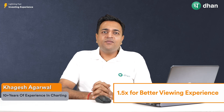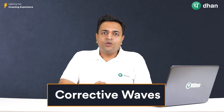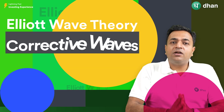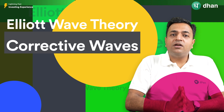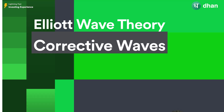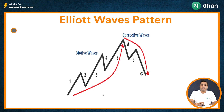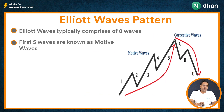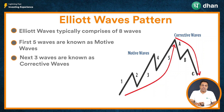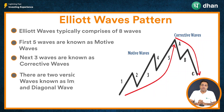Hi friends, in this final video on the Elliott Wave pattern structure, we will talk about corrective waves. To recap, Elliott Wave structure is an 8-wave structure where the first 5 waves are known as motive waves and the remaining 3 waves are known as corrective waves. There are a few rules to the Elliott Wave structure which we have extensively discussed and covered in the prior videos.